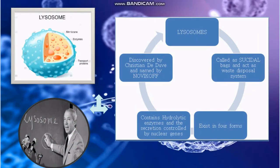About lysosomes: the lysosome was discovered by Christian de Duve in 1953. These are formed when Golgi bodies are pinched off from their tubules. Lysosomes act as the waste disposal system of the cell by digesting unwanted materials. Synthesis of lysosomal enzymes is controlled by nuclear genes, and mutations in these genes are responsible for more than 45 different human genetic disorders.